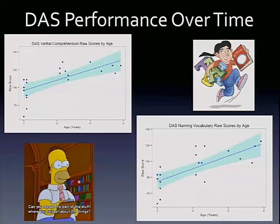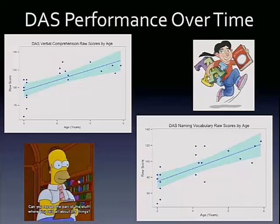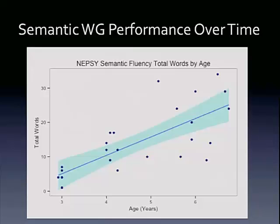First, looking at our DAS measures, we see over time that they do still have a linear relationship with age — raw scores are increasing in a linear fashion with age, but there's a lot of variability. It's not showing that nice trajectory the PLS score showed where it was almost a perfect linear relationship. So there's still a lot of variability in the sample across this task. We may expect that something other than age — something in addition to age — is accounting for performance. Similarly, in our semantic word generation task, performance is increasing linearly, but there's a lot of variability — this is accounting for about 55% of the variance, leaving 45% accounted for by something other than age.